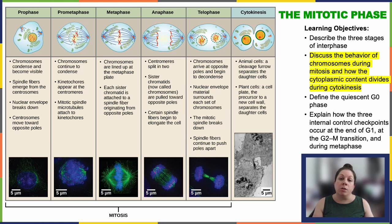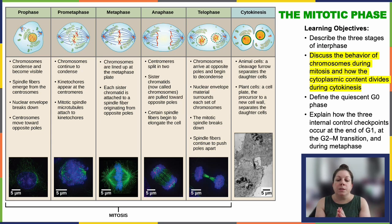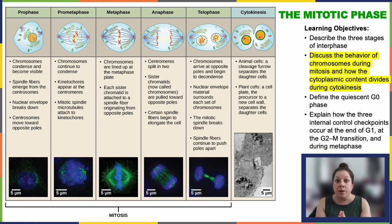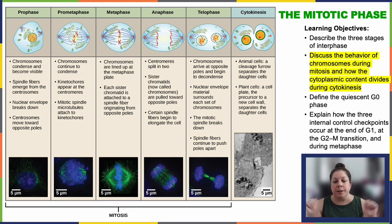Metaphase aligns all the chromosomes at the metaphase plate, which is basically the center of the cell between the two poles. At this point, tight sister chromatid connections are maintained. We want them right there together because if they start pulling apart too soon, you might end up with one connecting to the wrong spindle, getting two copies of the same chromosome moving to the wrong side. We want them to divide nice and evenly.